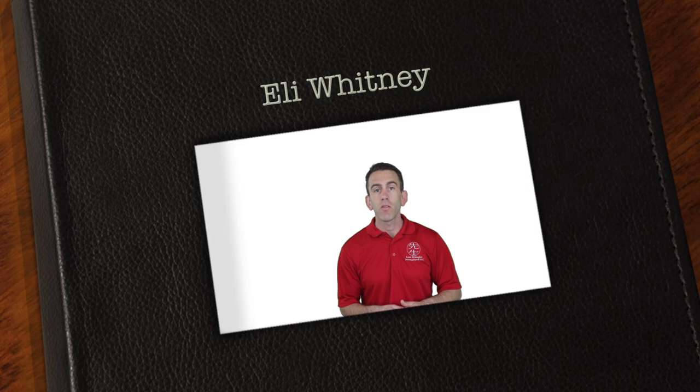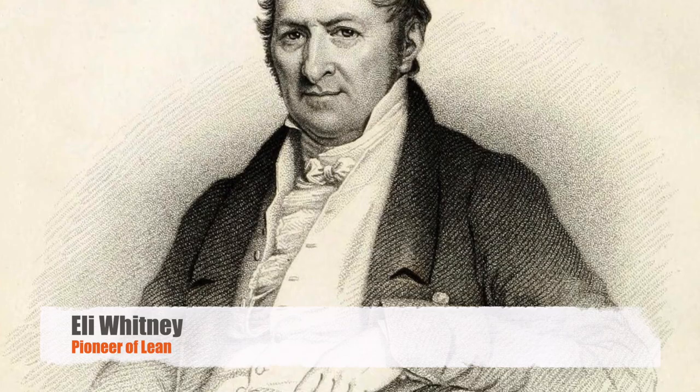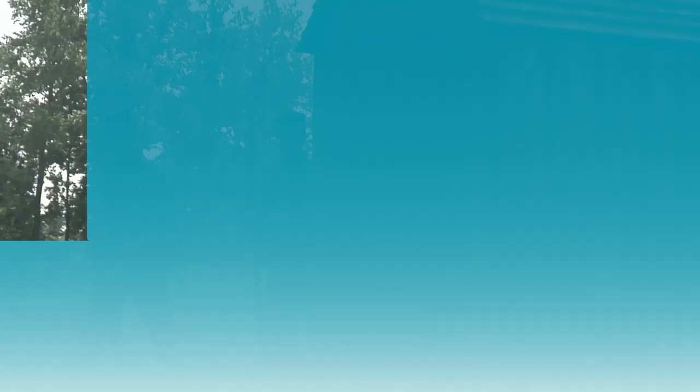Eli Whitney was a famous American inventor in the late 1700s and early 1800s. Most people know Mr. Whitney for his invention of the cotton gin. While his cotton gin invention was in fact revolutionary, many people attempted to steal the idea, which ultimately led to Mr. Whitney changing his focus to guns and ammunition.